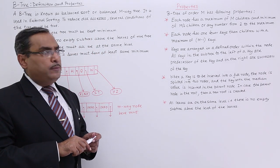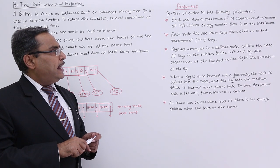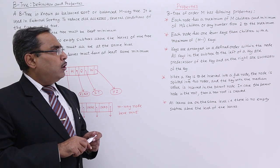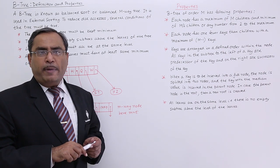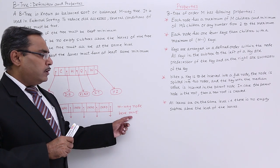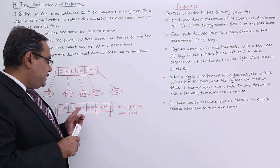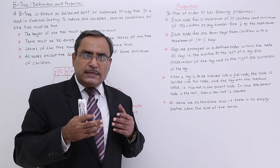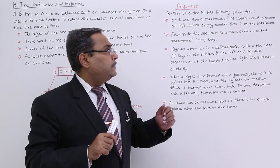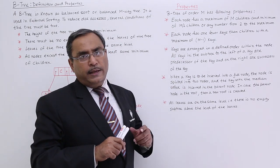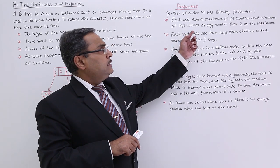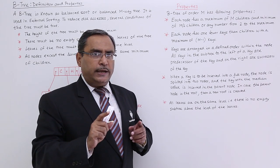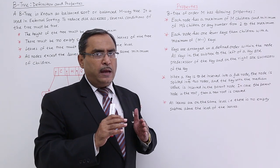B-Tree of the order of M has got the following properties. Each node has a maximum of M children and minimum of M by 2 children or any number from 2 to maximum obviously. As it is of the order of 5 or 5 way, it can have 5 links, so 5 children maximum it can point. That is why maximum number of children will be M, that is the maximum number of children, and the minimum number will be M by 2, or any number from 2 to maximum. That means a node cannot have one child. It is minimum it will be having 2 children.